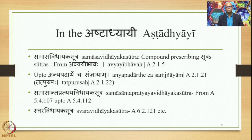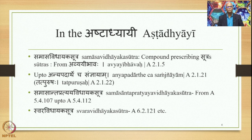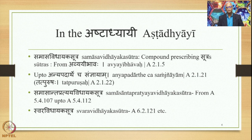These are called Samasa Vidhayaka Sutras and all of them in the Ashtadhyayi are found in 2.1 and 2.2. The Avyayibhava Samasa Vidhayaka Sutras are found in 2.1, precisely from 2.1.5 (Avyayibhavaha) up to 2.1.21 (Anyapadarthecha Soudnyayam). Incidentally, 2.1.22 is Tatpurushaha, and the sutras from 2.1.22 onwards prescribe the Tatpurusha Samasa up to 2.2.21. We have already studied the Tatpurusha Samasa in the first course on Samasa in this series.